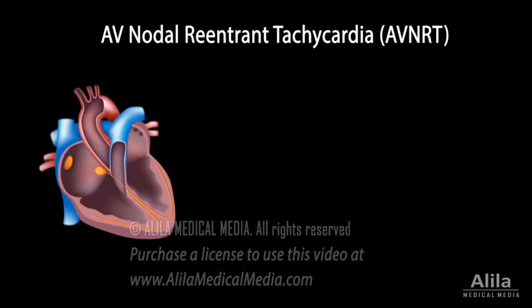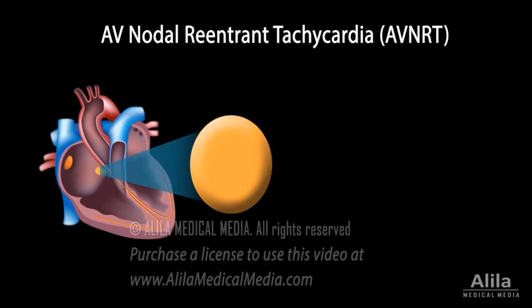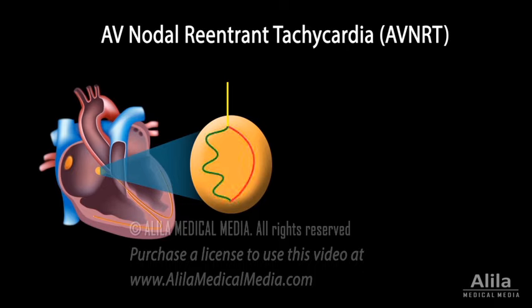AVNRT happens when the AV nodal tissue has two pathways with different conductivity — one slow and one fast. If an atrial impulse arrives at the AV node when one pathway is conductive and the other is refractory, it will follow the conductive pathway. However, it may circle back through the second pathway if this becomes excitable again before the signal leaves the node.